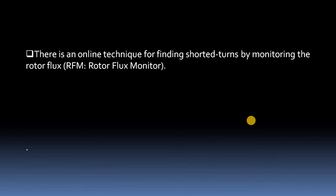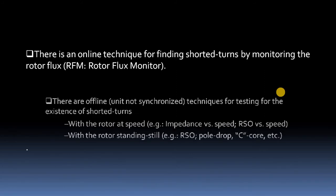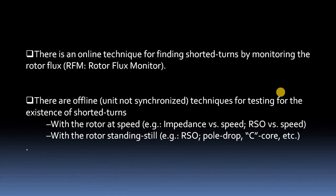This can be identified effectively using two broad methods: one is the online technique and the other is the offline technique. The online technique for finding shorted turns involves monitoring the rotor flux — we call this the RFM, or Rotor Flux Monitoring, technique.